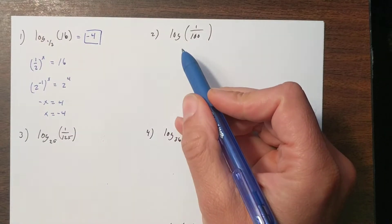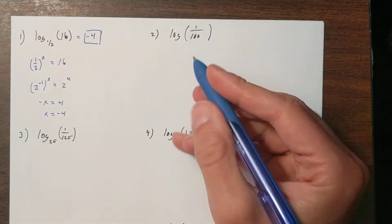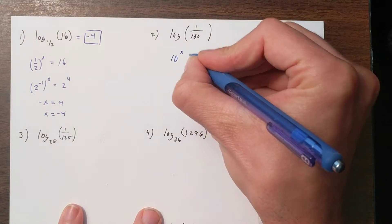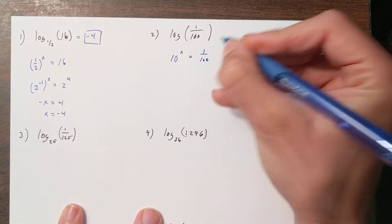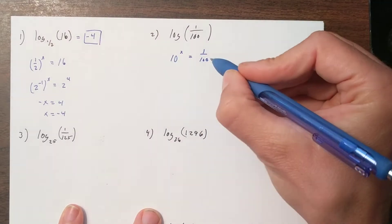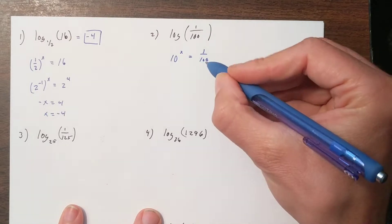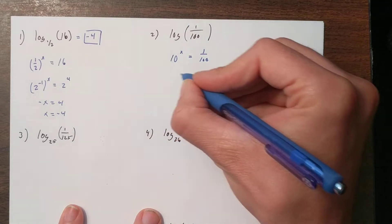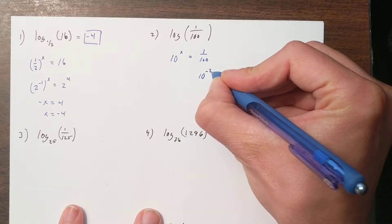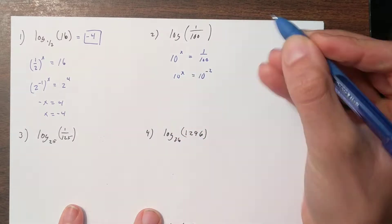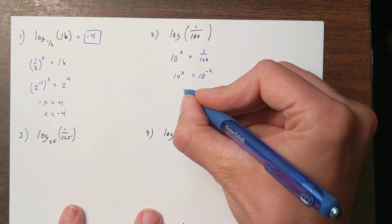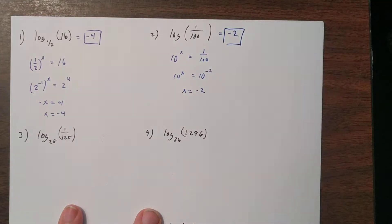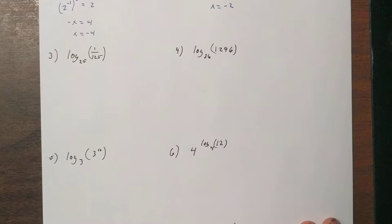This next one has no base written, which means it's base 10. So this is asking: 10 to what power is 1 over 100? Well, 10 squared is 100, and since this is 1 over 100, this is 10 to the negative 2. So 10 to what power equals 10 to the negative 2? That means x equals negative 2.